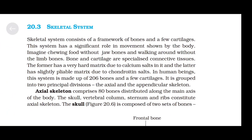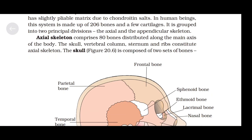Skeletal system. The skeletal system consists of a framework of bones and a few cartilages and has a significant role in movement. Bone and cartilage are specialized connective tissues. Bone has a very hard matrix due to calcium salts, and cartilage has a slightly pliable matrix due to chondroitin salts. In human beings this system is made up of 206 bones and a few cartilages. It is grouped into two principal divisions: the axial and the appendicular skeleton. The axial skeleton comprises 80 bones distributed along the main axis of the body. The skull, vertebral column, sternum, and ribs constitute the axial skeleton.